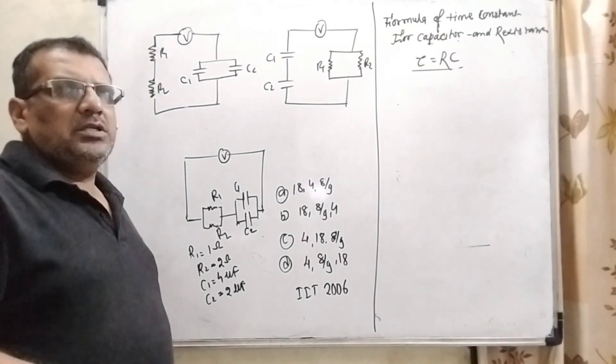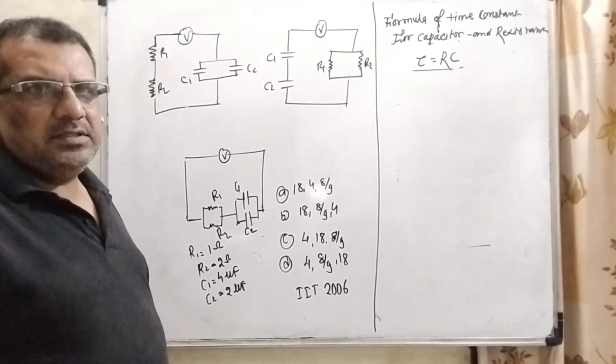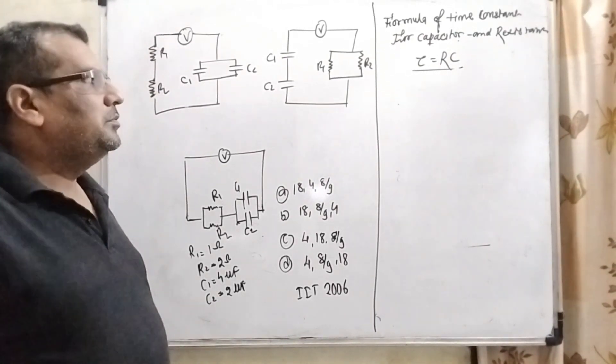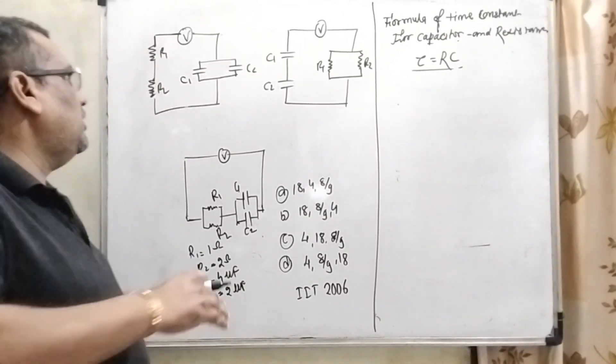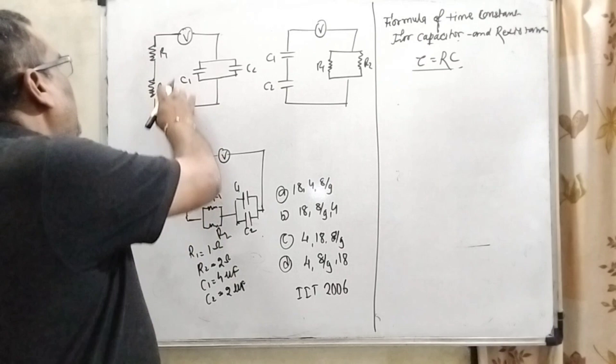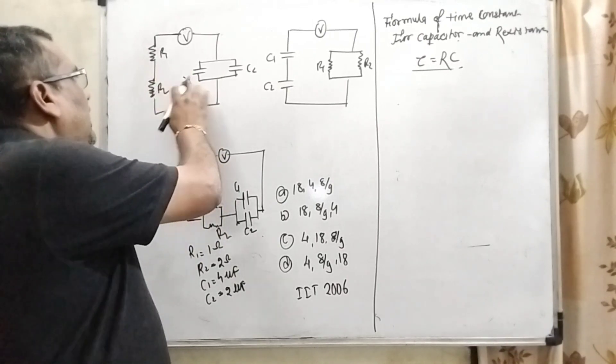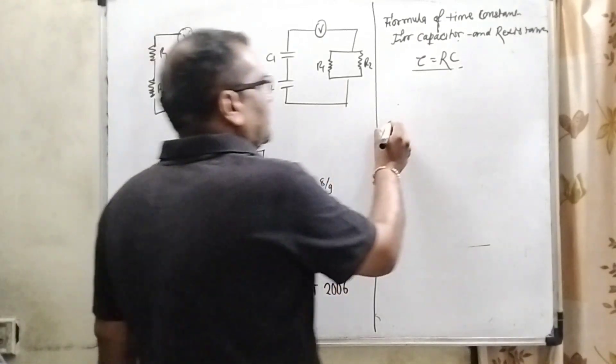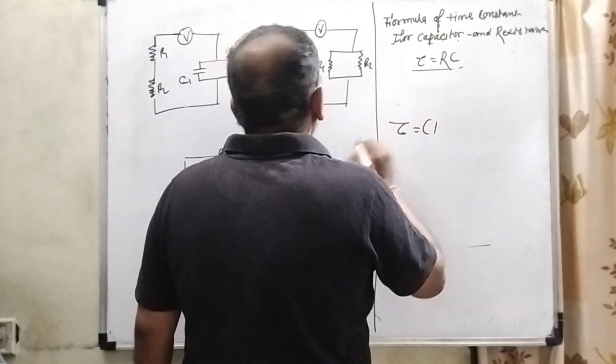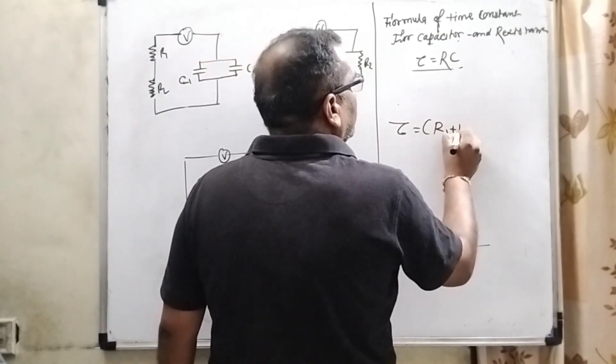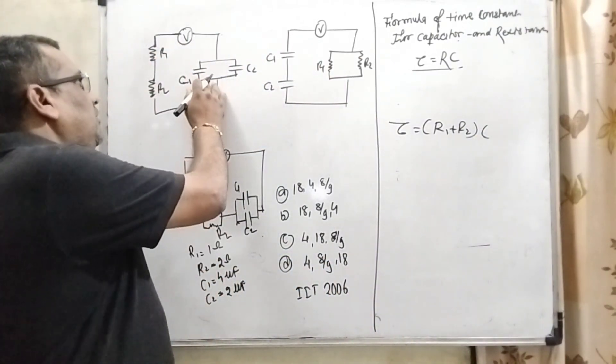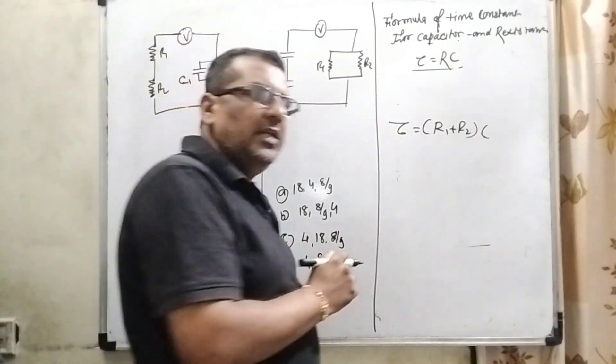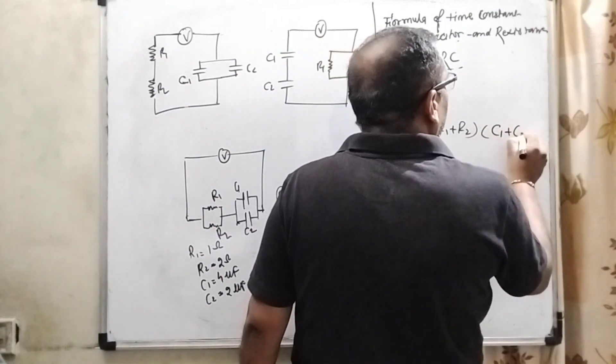Now, formula for time constant containing resistance and capacitance, tau equal to R into C. R is resistance, C is capacitance. According to the first diagram, R1, R2 are in series and C1, C2 are parallel. So net resistance, when they are in series, R1 plus R2. And the capacitors when parallel, their net capacitance is C1 plus C2.